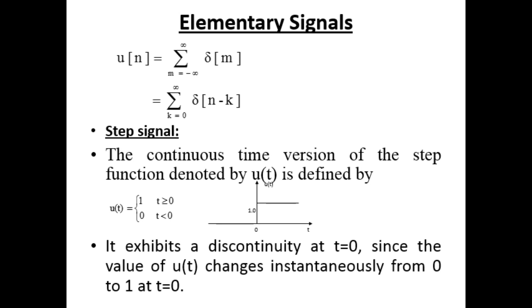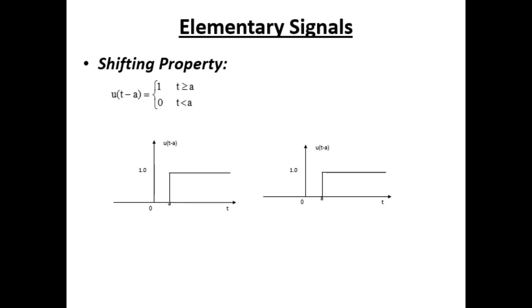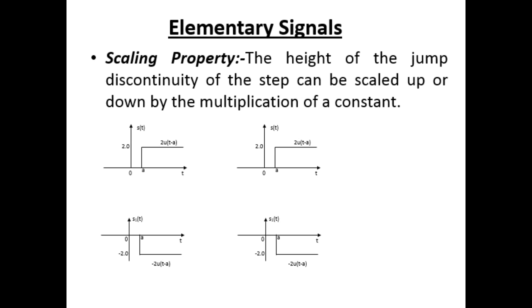Next, we study the step function. The continuous time step function u(t) is defined as u(t) = 1 when t ≥ 0 and 0 when t < 0. It exhibits a discontinuity at t = 0, since the value changes instantaneously from 0 to 1. The shifting property gives u(t − a) = 1 for t ≥ a, and 0 for t < a. The scaling property states the height of the jump discontinuity can be scaled up or down by multiplying by a constant.